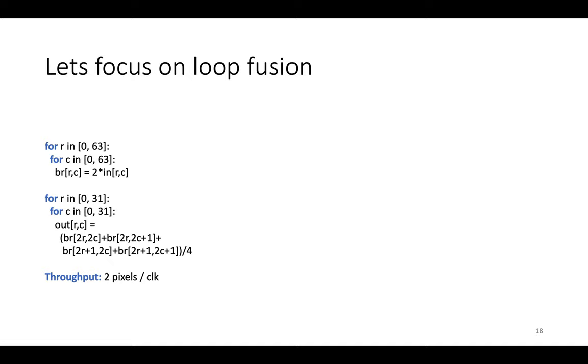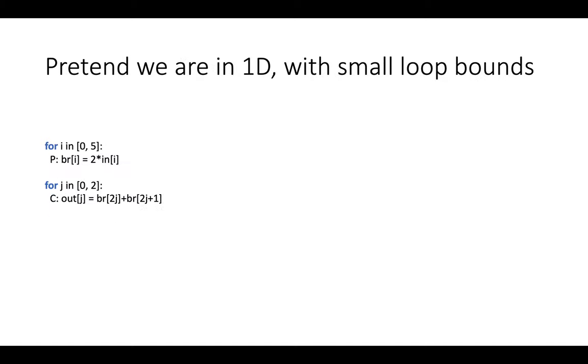I want to really just zero in on loop fusion because the analysis that we do to determine unrolling factors is almost exactly the same as the analysis that does loop fusion. Let's forget about loop unrolling and the throughput target for a second. To make the analysis even easier, let's simplify this loop nest and pretend that we're in 1D and that the loop bounds are a lot smaller so that we can draw out the exact trace of events in this tiny program. Then we'll generalize back to the two-dimensional case with realistic bounds.